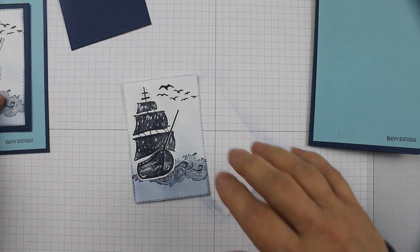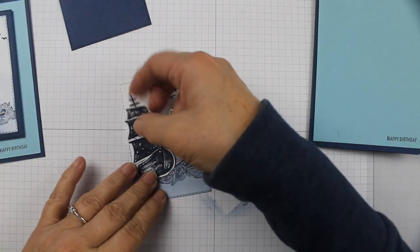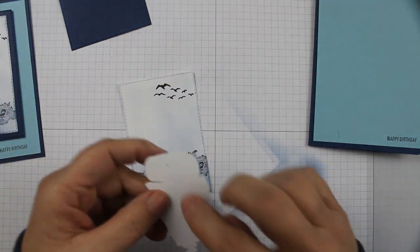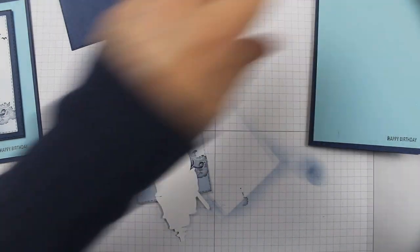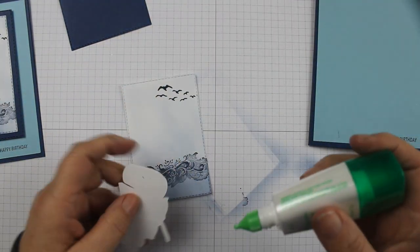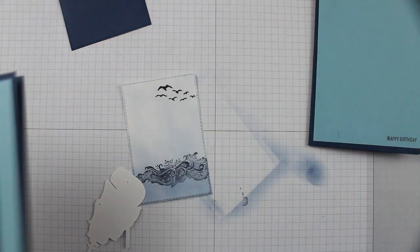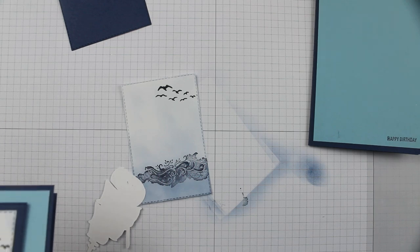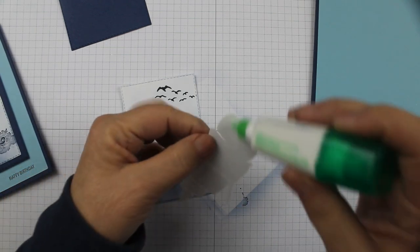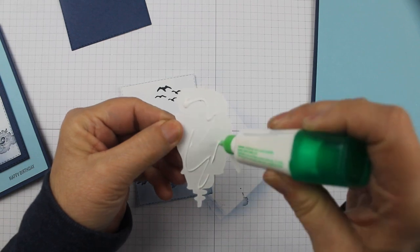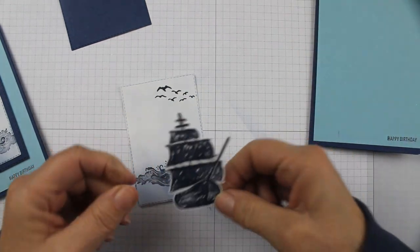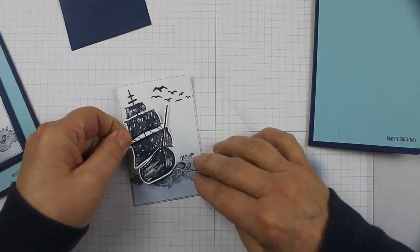And then I just used glue dots, or you could use glue. I'll just use glue I think for this. What did I use the last time? Yeah, I don't know. We can use glue, doesn't matter. Put some glue on your ship.